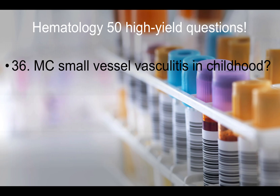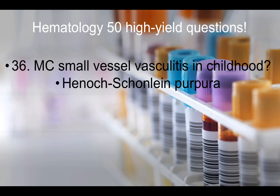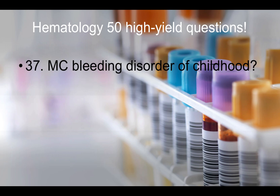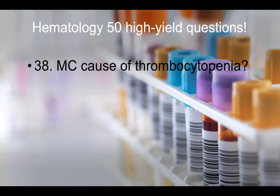Question thirty-six: Most common small vessel vasculitis in childhood — that would be Henoch-Schönlein purpura (HS purpura). Question thirty-seven: Most common bleeding disorder in childhood — that would be ITP. Question thirty-eight: Most common cause of thrombocytopenia — ITP.